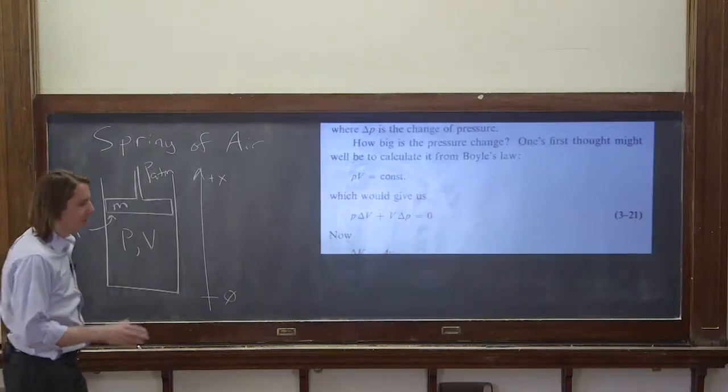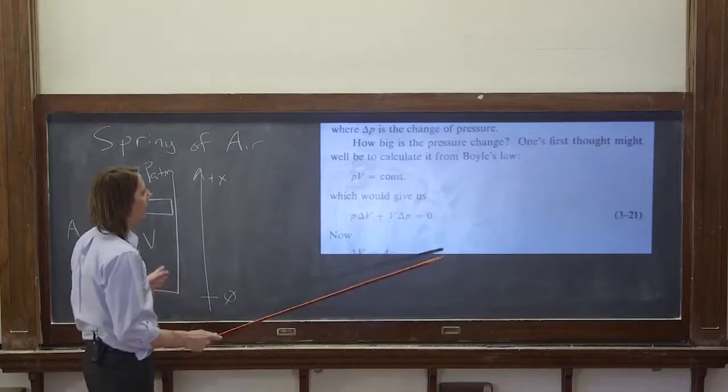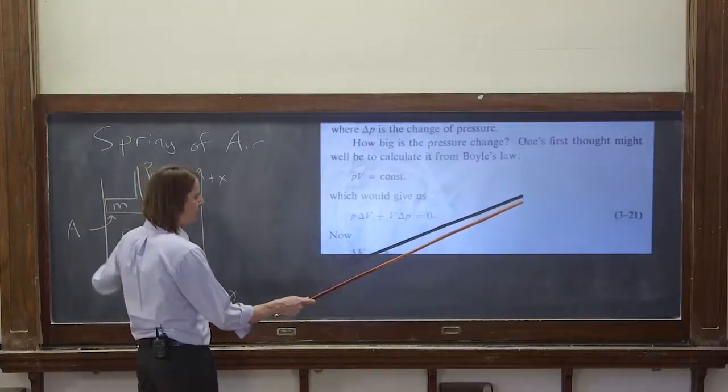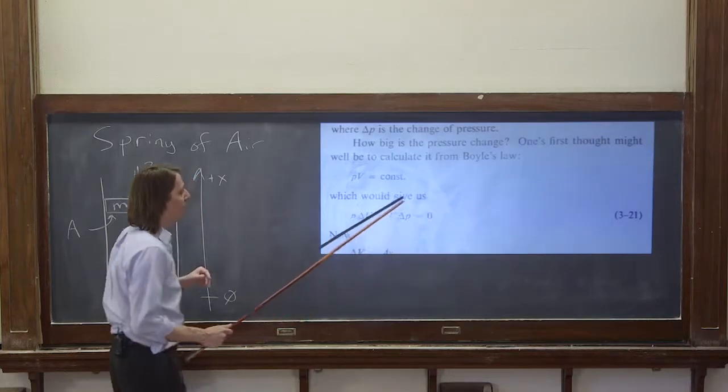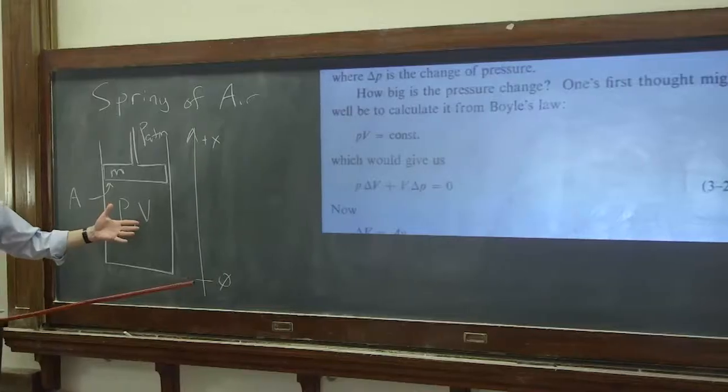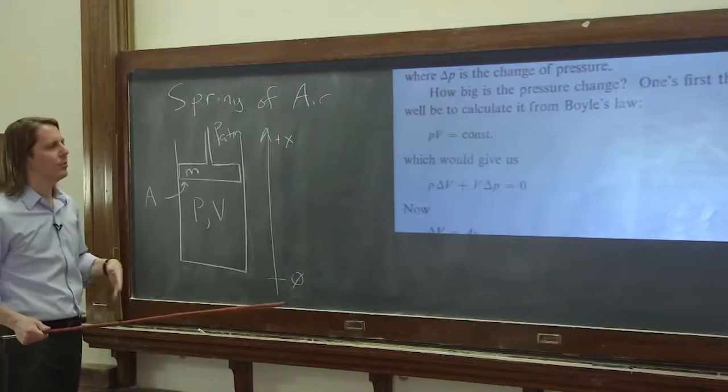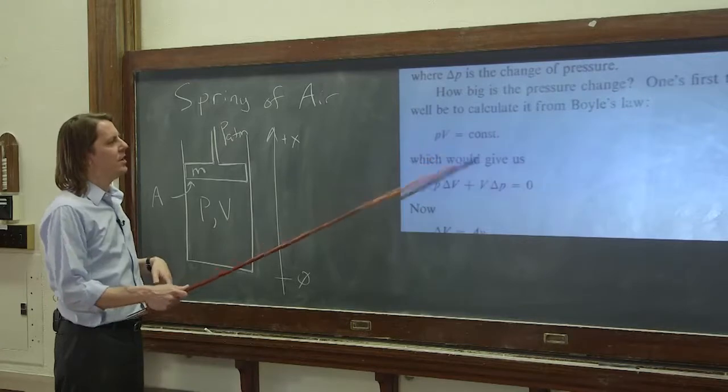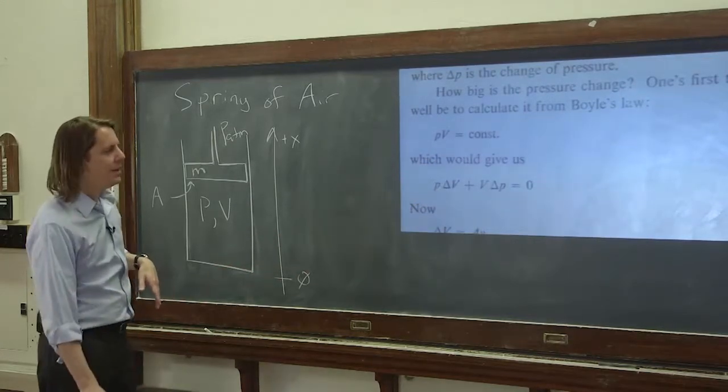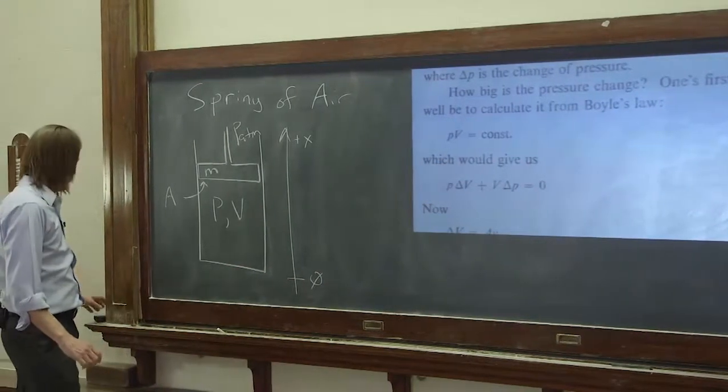He started out similar to how I start out here, thinking about the pressure change. One's first thought might be to calculate it from Boyle's Law, and that's what we're going to do. We're going to say pressure times volume is a constant, or nRT if we use the full gas law. He says PV equals constant if things change would give you P delta V plus V delta P equals zero, clearly.